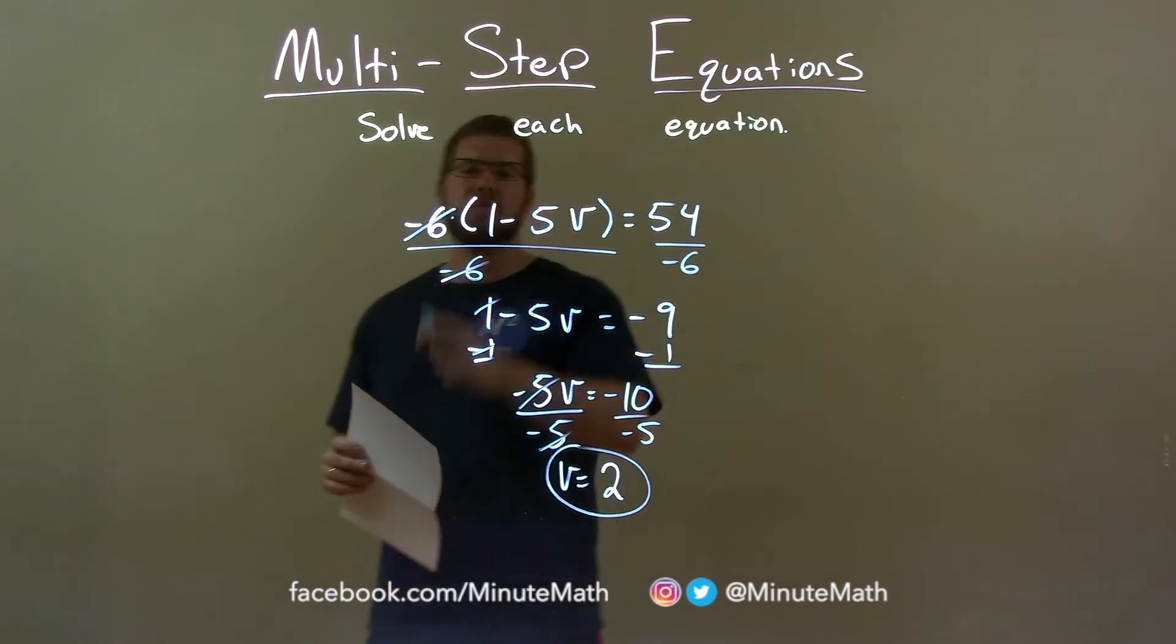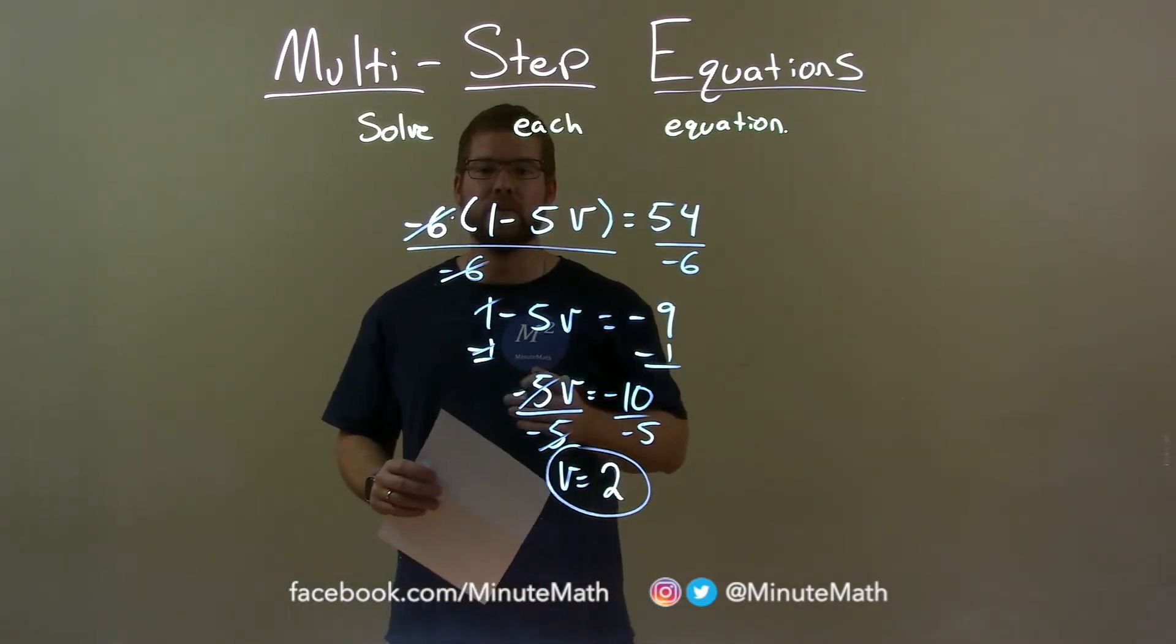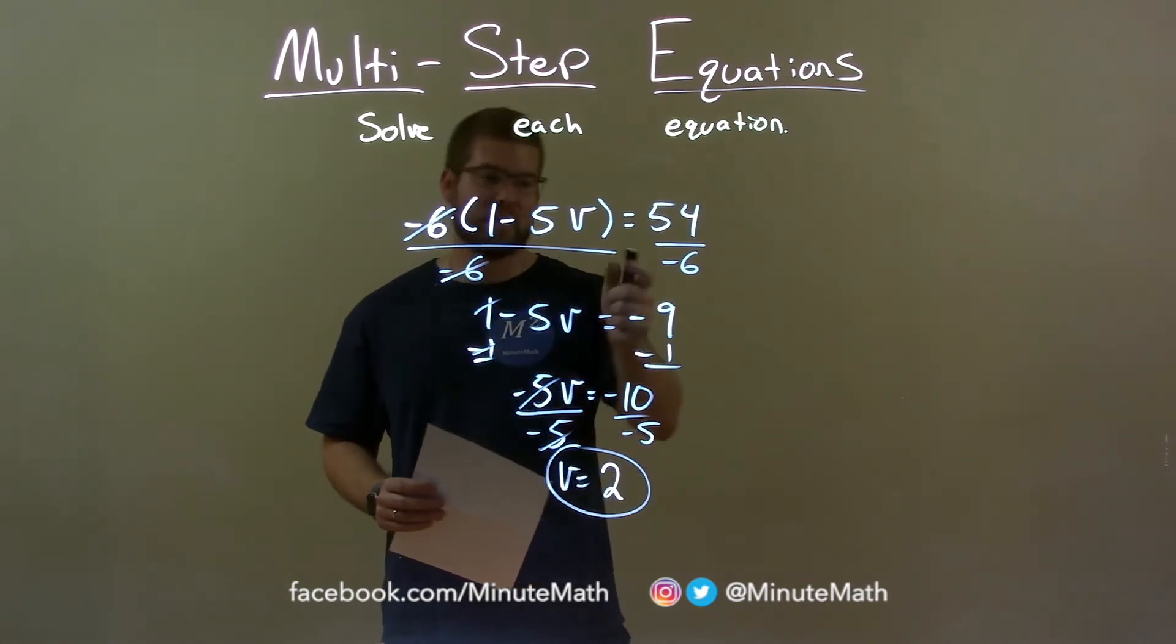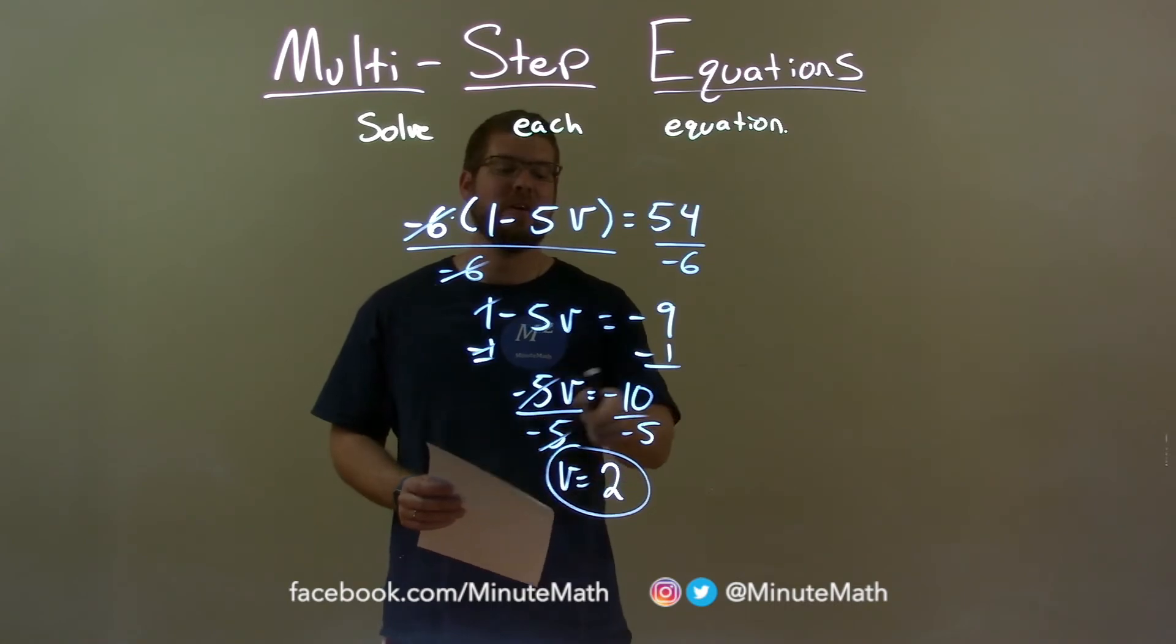Quick recap, we have negative 6 times 1 minus 5V equals 54, and we want to solve for V. Divide both sides by negative 6, then subtract 1 from both sides, divide both sides by negative 5, final answer is V equals 2.